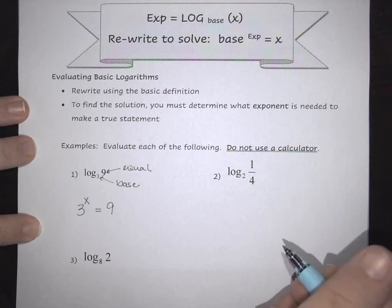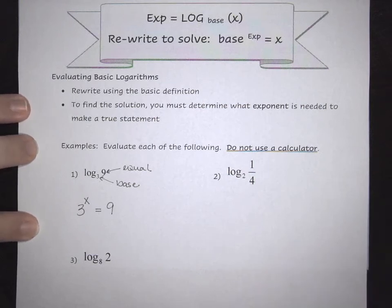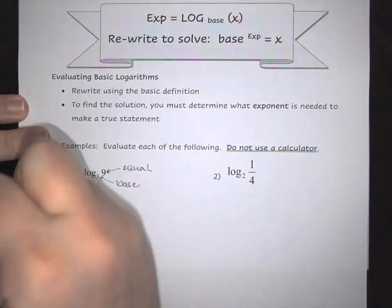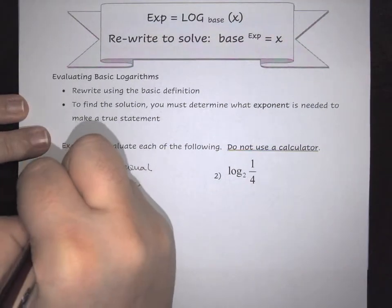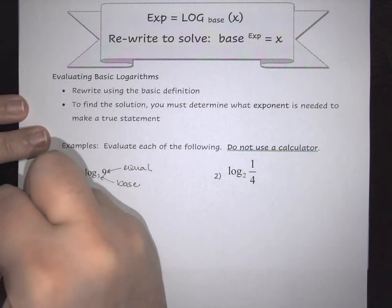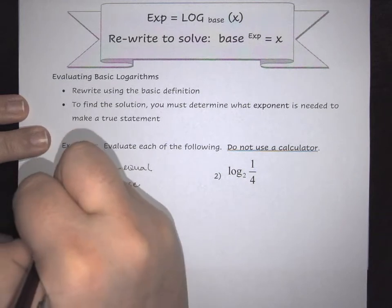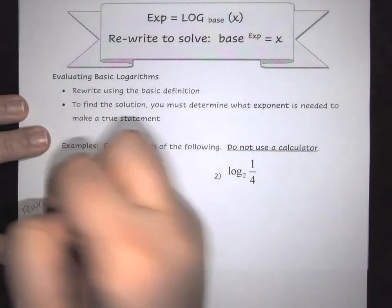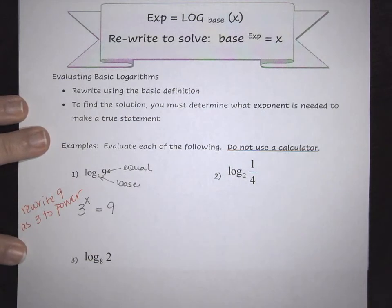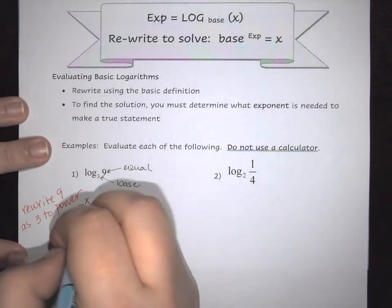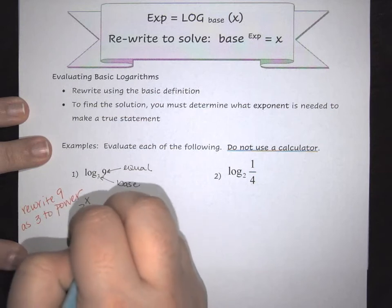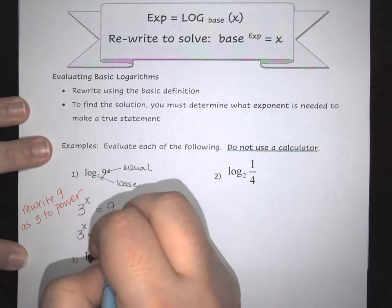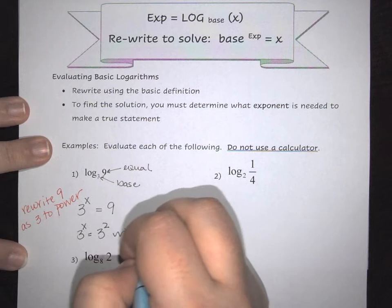We can fall back to the ideas we use with exponents, which would say that we want to rewrite 9 as 3 to a power. In this case we know that 9 is the same as 3 squared. So we have 3 to the x is equal to 3 squared. This means that x equals 2.